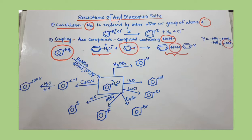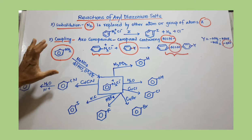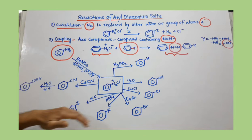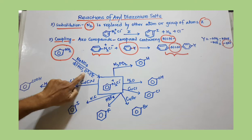In this video we are going to discuss substitution reactions. By looking at this reaction map, you can see how diazonium salt is useful for the preparation of different organic compounds. The starting compound is aniline.